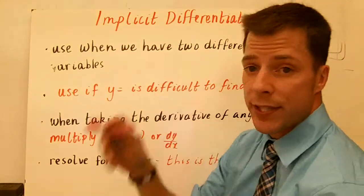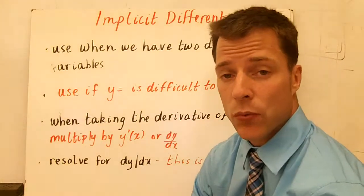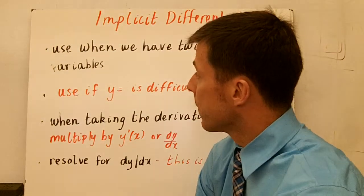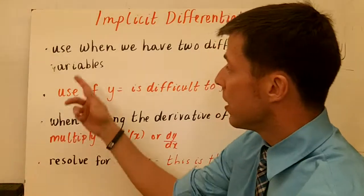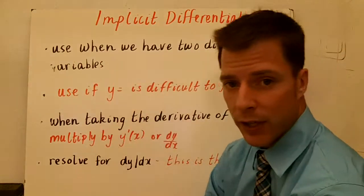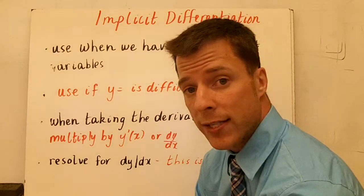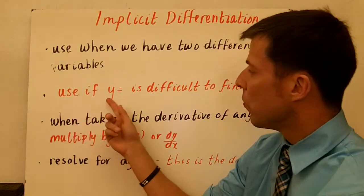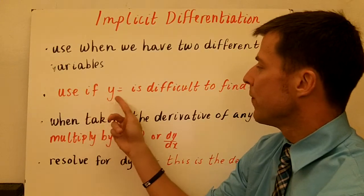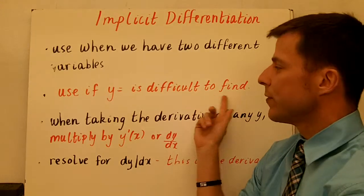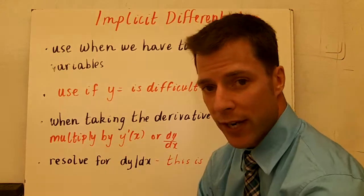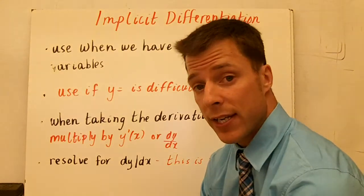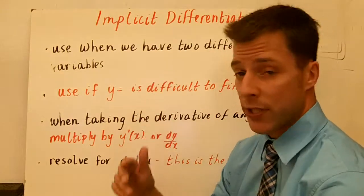Alright guys, welcome to implicit differentiation, one of the last rules that we're going to talk about when we speak about derivatives. Implicit differentiation happens when you have two different variables — most commonly, you're going to have an x and a y together. Use implicit differentiation when y equals is difficult to find, meaning if you have x and y on one side of an equation and you can't solve for y very easily, then we're going to use implicit differentiation.